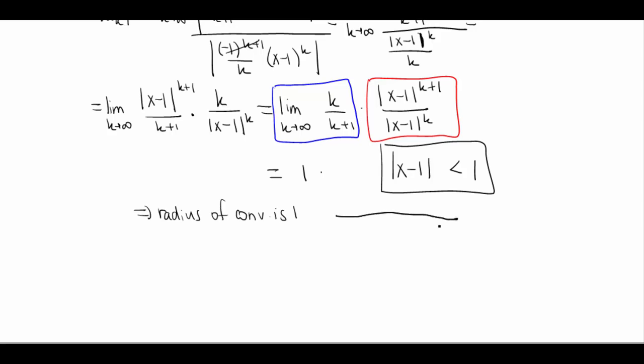Let me draw out a number line. So I'm centered at 1. I'm gonna go 1 to the right, and I'm gonna go 1 to the left. So if I go 1 to the left, that's gonna put me at 0. If I go 1 to the right, that's gonna put me at 2. So this is my possible interval of convergence going from 0 to 2. So now I need to test these endpoints.